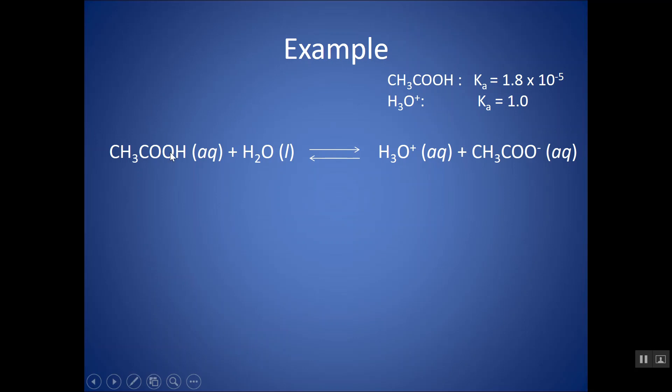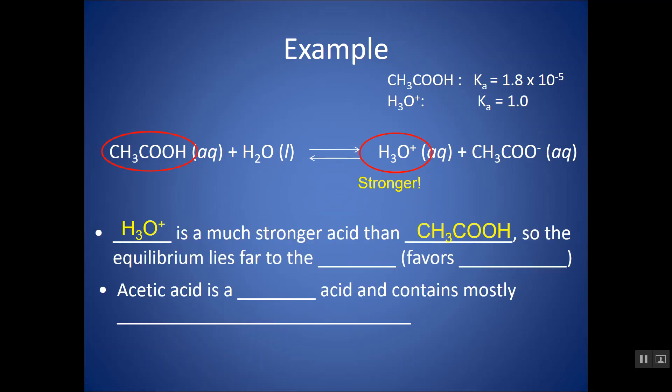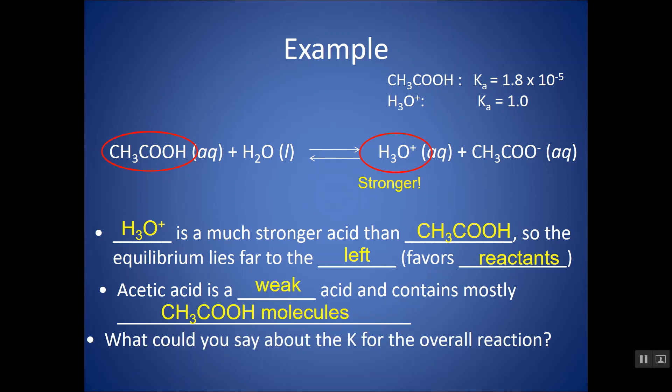And then another example, here's acetic acid, and here's H3O+, and I give you the Ka's. Notice that now H3O+ is a much stronger acid, so it's going to favor the reverse direction. H3O+ is stronger than acetic acid because the Ka is larger, so equilibrium lies to the left. It favors the reactants, and that's why in this reaction, acetic acid is actually a sample of it, contains mostly the molecules rather than the ions. And what would you say about K for this overall reaction? If it lies to the left, K should be less than 1.